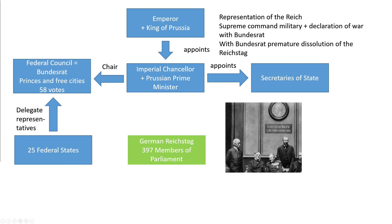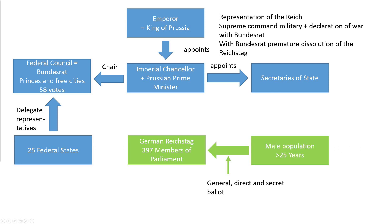The Reichstag was elected by universal, direct and secret suffrage by the male population over the age of 25. Men in military service were not allowed to vote, so that the military was not politicized. Men who were dependent on public poor relief, who were insolvent, or who were incapacitated or deprived of their civil rights, were also not allowed to vote. The constituencies were based on the 1864 census.